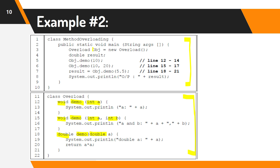When the main method accesses these using the object OBJ referring to class Overload, OBJ.demo(10) refers to the first method which holds one integer value — the value 10 will be passed to variable A and printed. Next, OBJ.demo(10, 20) will access the method holding two integer values — 10 received by A, 20 received by B, and both values are printed.